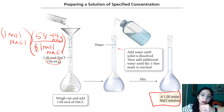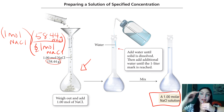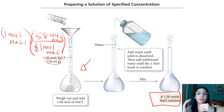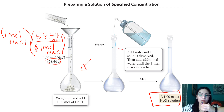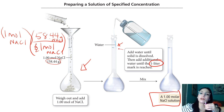You pour it into something called a volumetric flask — a piece of glassware that has a certain line on it, and at that line is exactly a certain volume. You add the solid in first, then add water up to the line, diluting to the volume you need. Specifically it's a one-liter flask, so after mixing, it's a one molar solution.